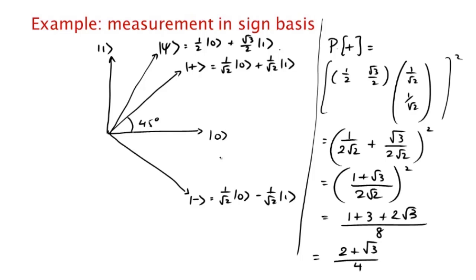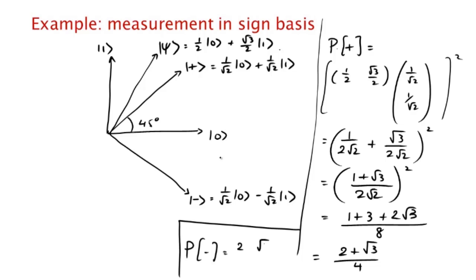Now of course you can work out something similar for the probability of |−⟩, but the other way you can do this is to realize that P(+) + P(−) = 1, so the probability of |−⟩ is just (2 − √3)/4.